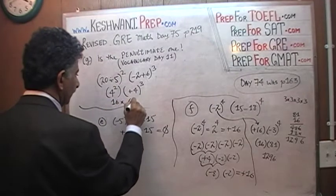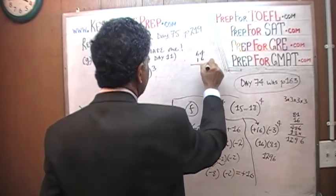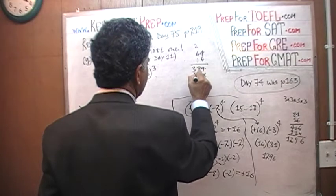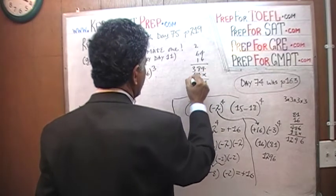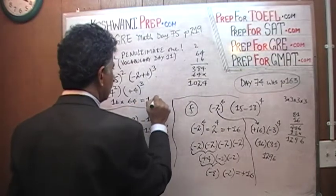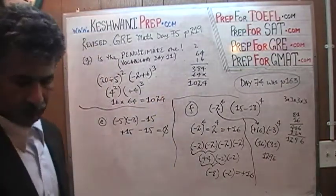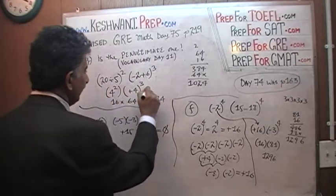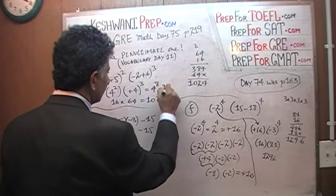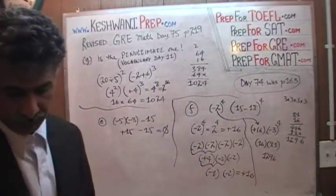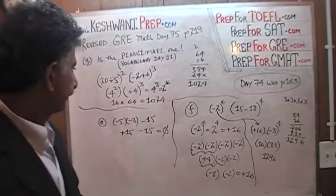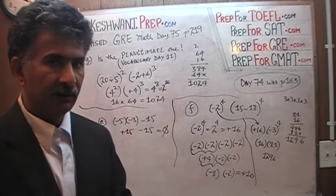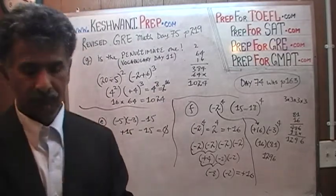16 times 64. Let's do it out here. 64 times 16: 24, carry 2, 36 and 2 is 38. And then 64. The answer is 1024. Which of course is 4 raised to 8, which is the same as 2 raised to 16 — and that's how they define the megabyte in a computer. A megabyte is not 1000 kilobytes; because of the binary system it's 1024. That was G.